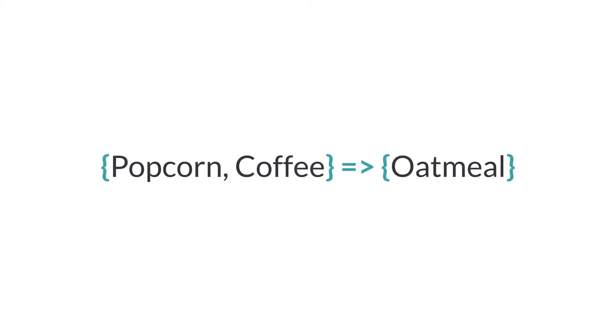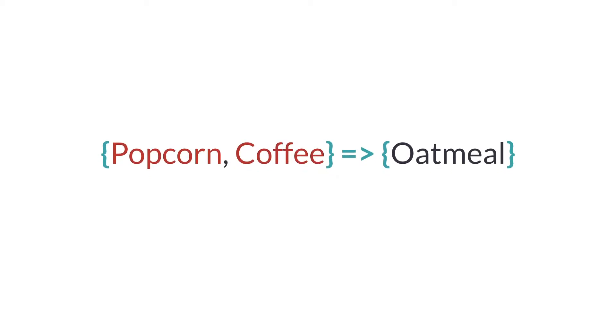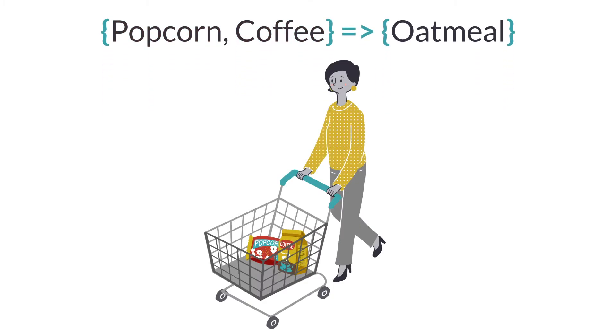The rules can get even fancier. This rule has two antecedents — popcorn and coffee — meaning the customer already has both, and the rule says the customer will put oatmeal in the cart too. There can be many reasons: are customers making breakfast, feeding their kids, or baking cookies? The beauty of affinity analysis is it doesn't get into any of this. It specifically does not care if you are going to eat the oatmeal or bathe in it. Affinity analysis is pure statistical data mining of item associations, not customer psychology.